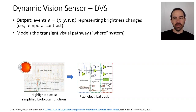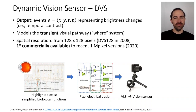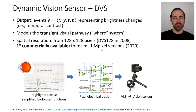From this pixel design, we go into VLSI — very large scale integration — and produce the vision sensor. This is the DVS 128 from about 10 years ago. The spatial resolution has changed. The first commercially available camera, the DVS 128, was 128 by 128 pixels, but now recent versions of the DVS reach about one megapixel.